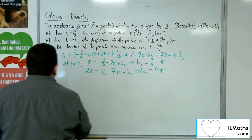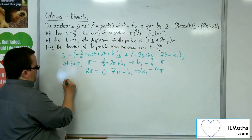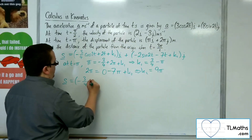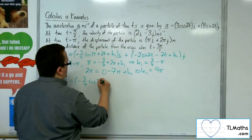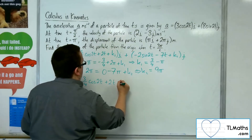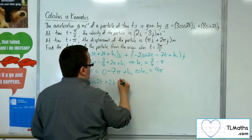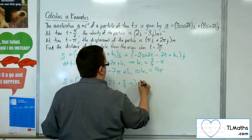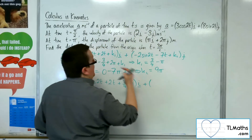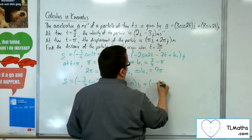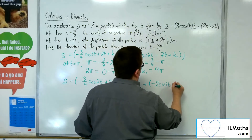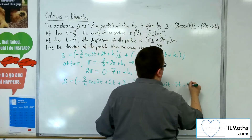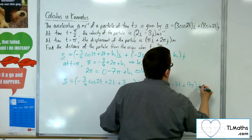So I now have a vector equation for the displacement: the i component is minus 3/4 cosine 2t plus 2t plus k1, which was 3/4 minus π. The j component is minus 2 sine 2t minus 7t plus k2, which was 9π.